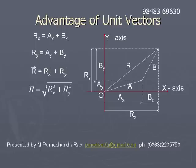The magnitude r equals the square root of rx² plus ry². The angle θ made by r̄ with the x-axis is given by tan θ equals ry divided by rx. By using components in this way, we can find the resultant of any number of vectors.